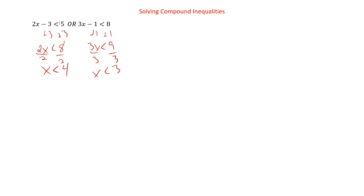I meant to have this one be the other way — we weren't going to get to this type for another slide or two. Oh well, I guess we're going to get to this type now. So if we graph this, we have zero, three, and four. One of them says x is less than four, so we have that one going that way. The other one says x is less than three, so we have that one going that way as well.